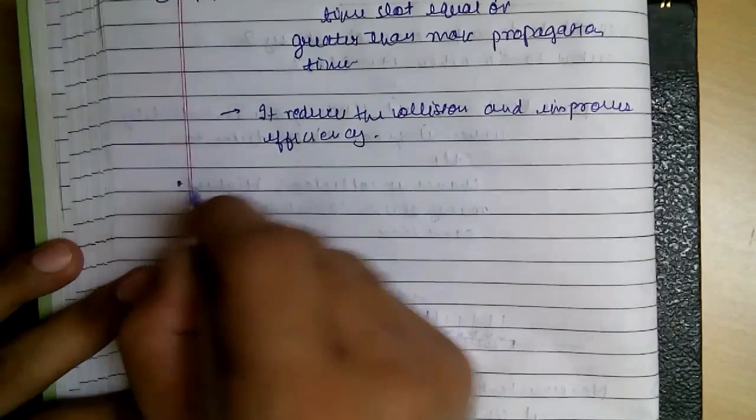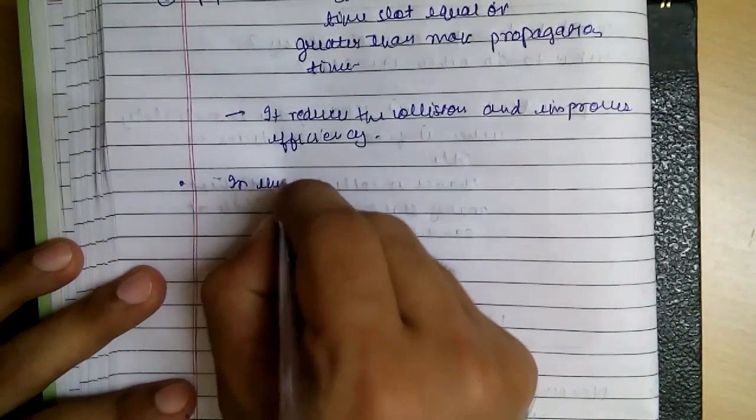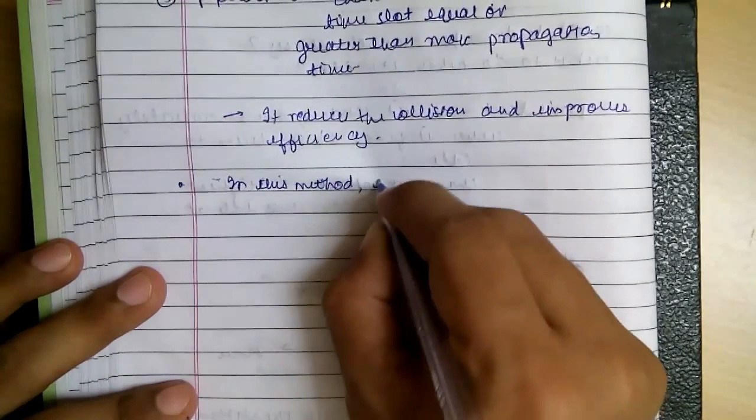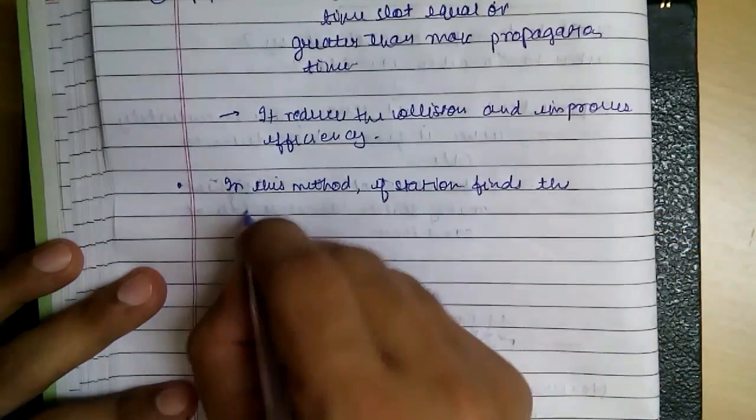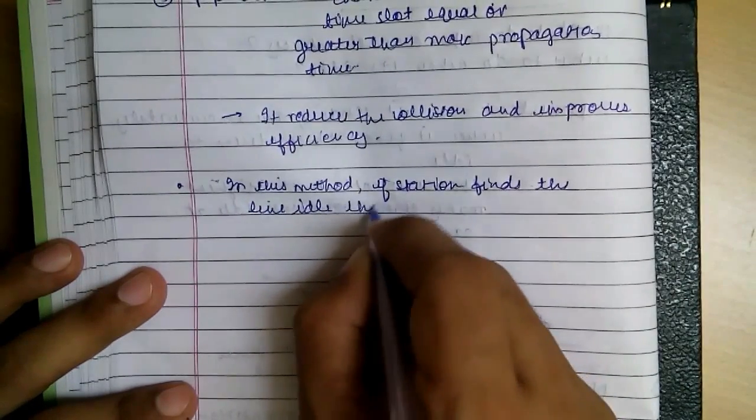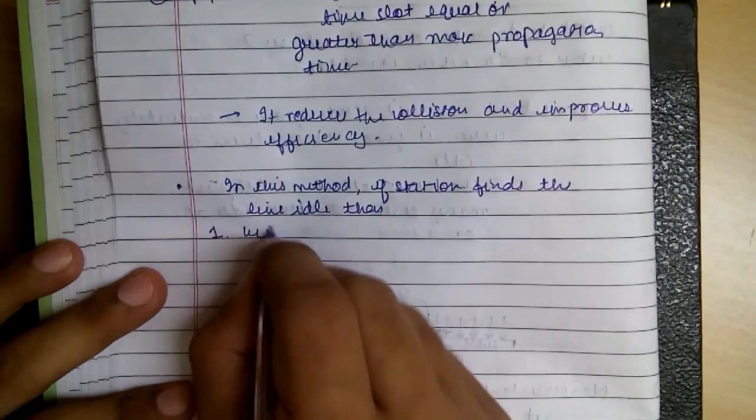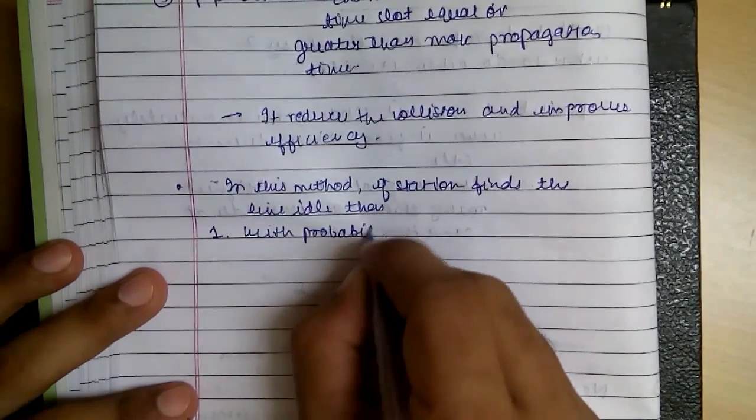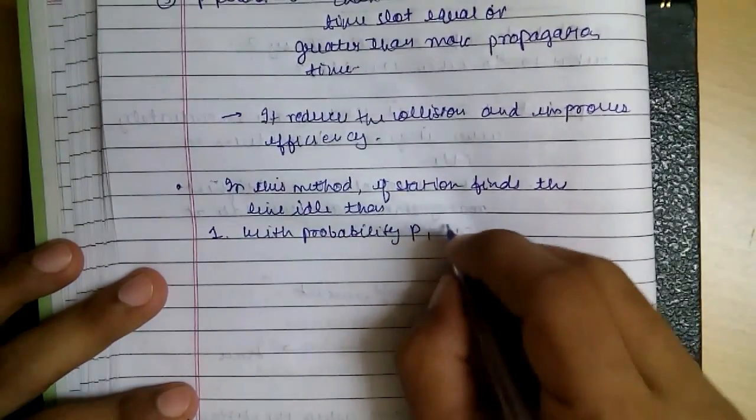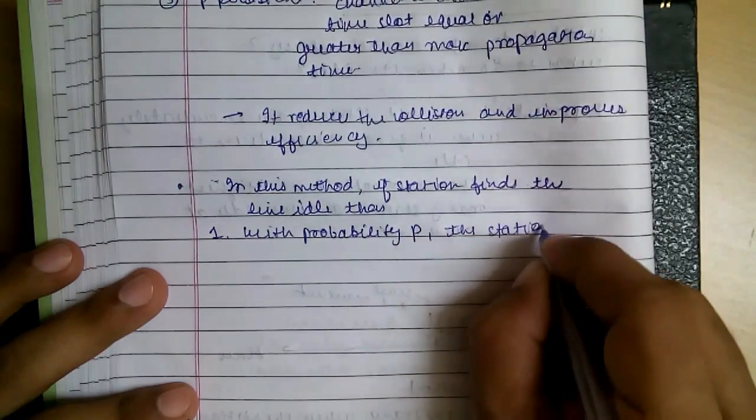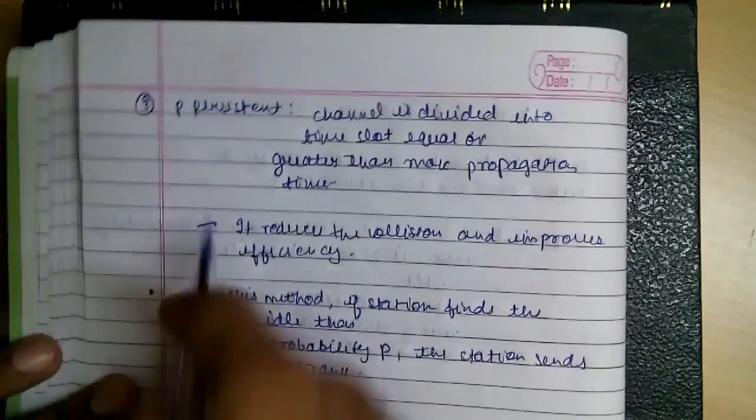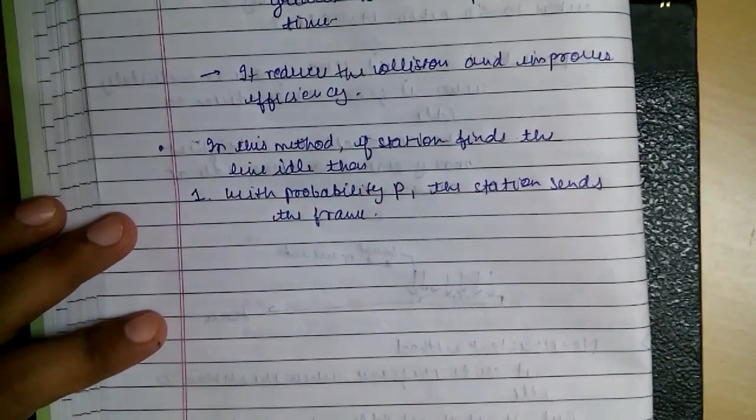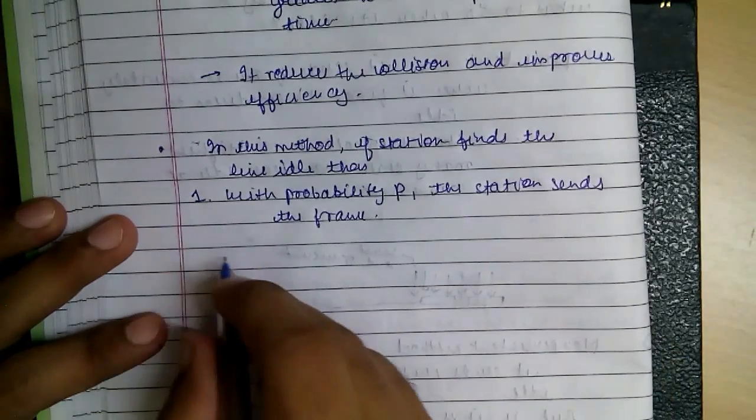So what happens in this protocol, this persistent method, is that in this method, if a station finds the line idle, then with the probability P, the station sends the frame. That's why it is called P-persistent. So it senses that if the line is idle, then it takes some probability P, and by that probability it decides to send.